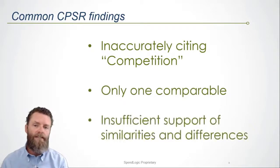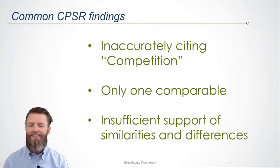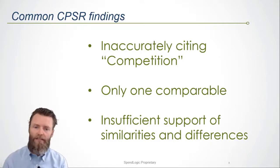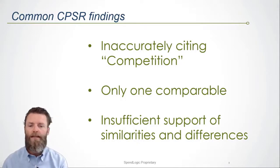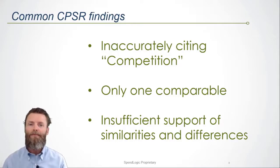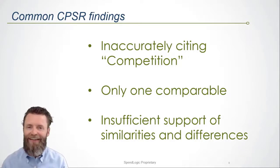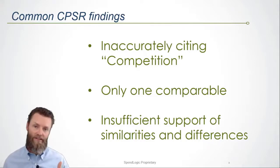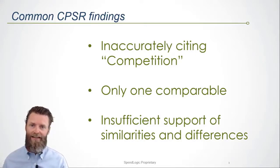Some common CPSR findings — when DCMA auditors are looking at market comparables, these are the big ones they cite if there is a finding. First and foremost, people get confused between competition and market comps — that's actually a finding in competition rather than market comps. The second one is only having one comparable item. And last but not least, insufficient support when comparing two items: just doing a very surface level analysis and saying 'trust me, they're the same or they're different' — that doesn't cut the mustard.